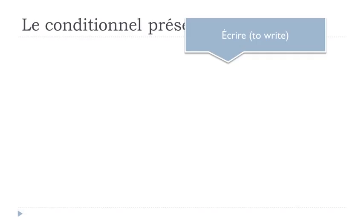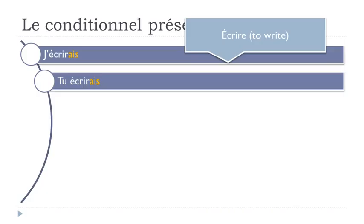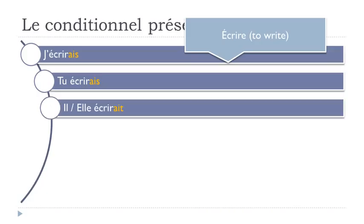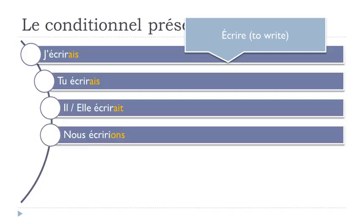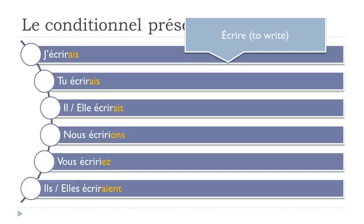The last example for the third group is écrire (to write). Same rule — if you look carefully, it ends with this E, so you take it away and put the ending: j'écrirais, tu écrirais, il écrirait, elle écrirait, nous écririons, vous écririez, ils écriraient, elles écriraient. It's not that difficult.